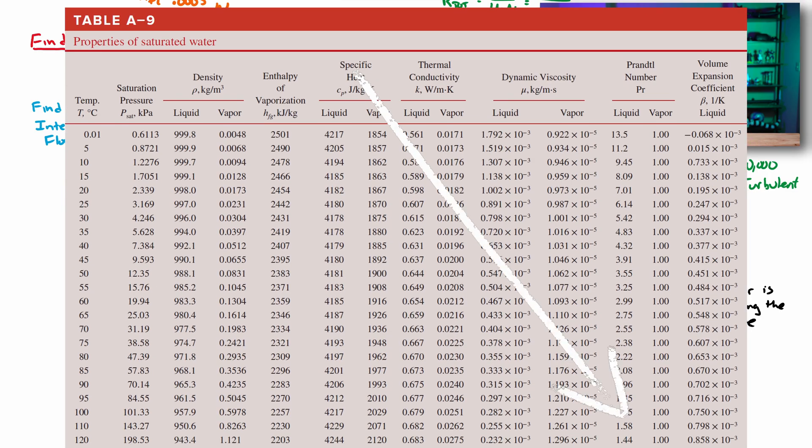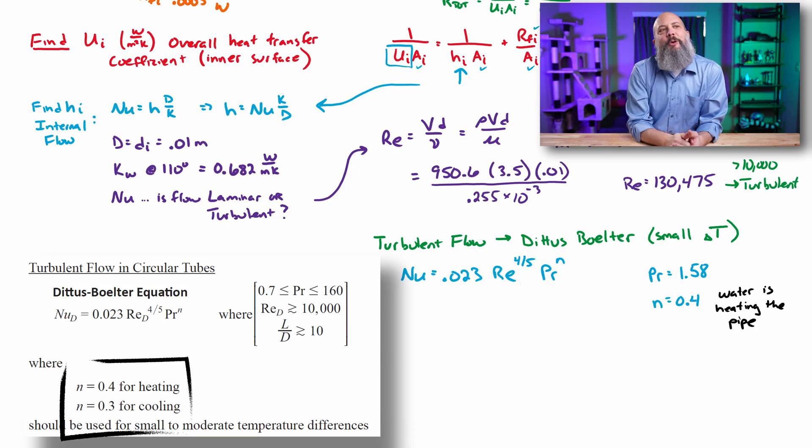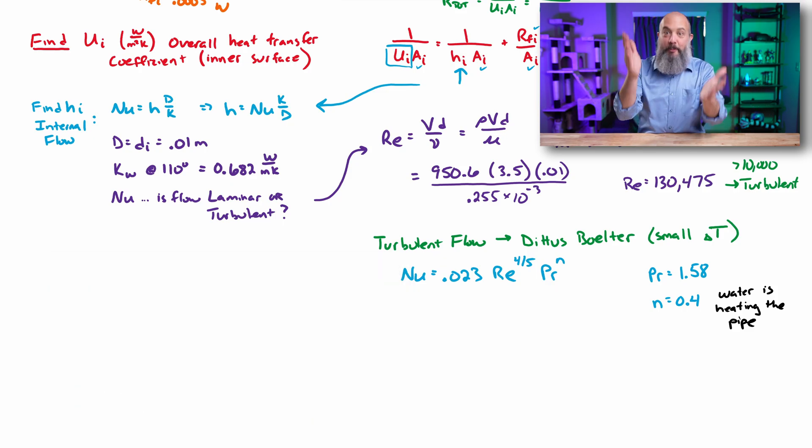We do still have to look up more numbers. Prandtl number here, 1.58. And the value for n, there's a different value for n if it is heating up or cooling. And the question is always, which part is heating up or cooling? Every time there's heat transfer, something is heating up. If it goes from hot to cold, energy is going from hot to cold. This hot thing is cooling and the cold thing is heating.